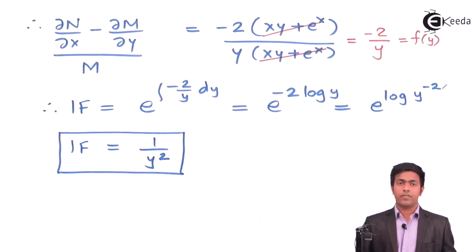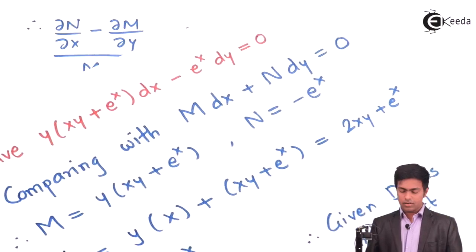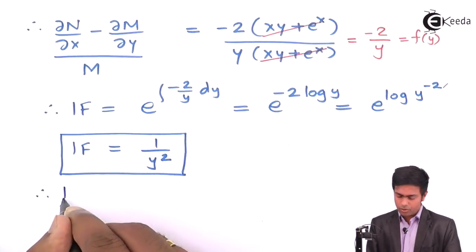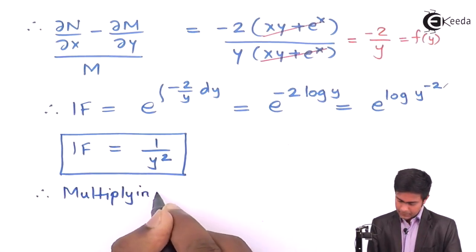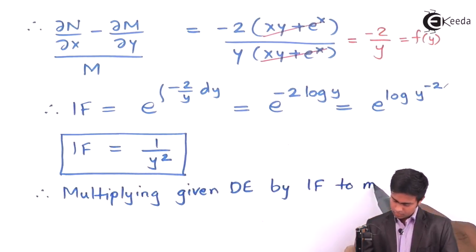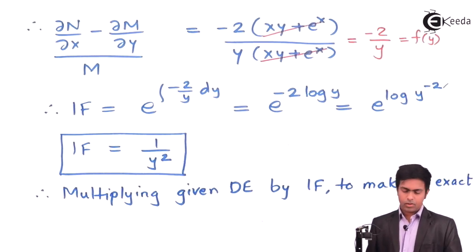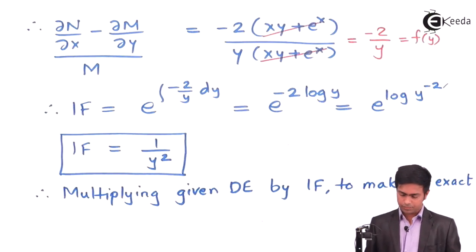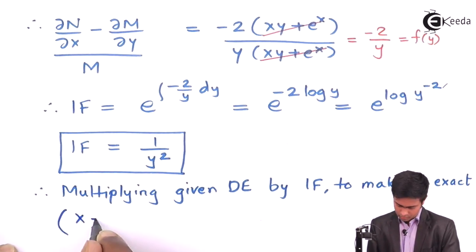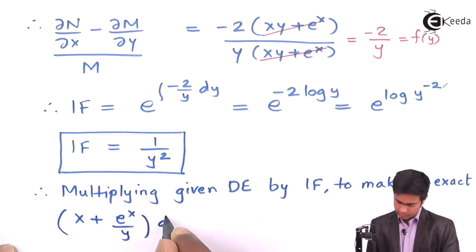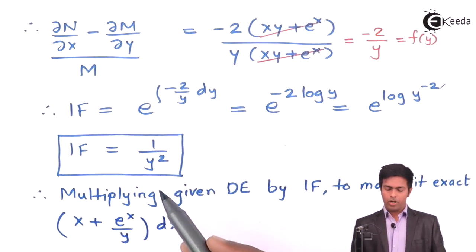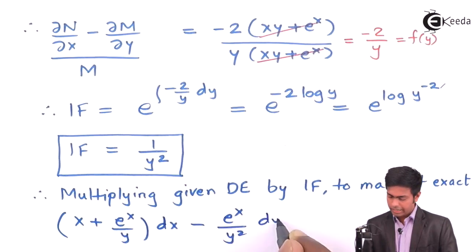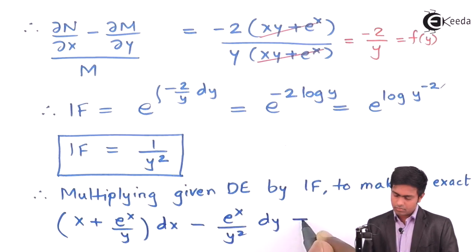We now multiply the given differential equation by the integrating factor 1/y². Multiplying the first term by 1/y² gives the new M term in dx, and multiplying the second term by 1/y² gives −e^x / y² dy, so the equation becomes the new M dx + (−e^x/y²) dy = 0.